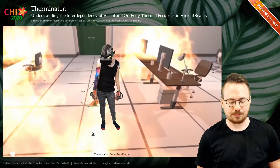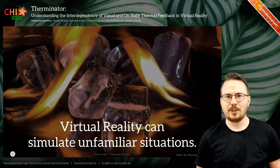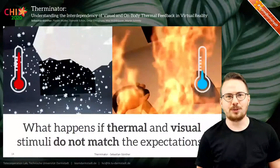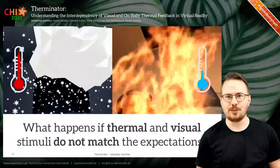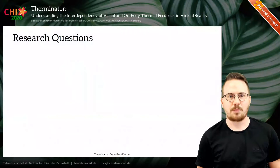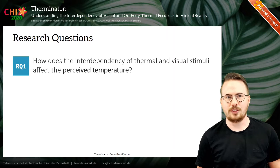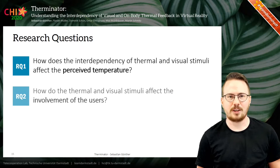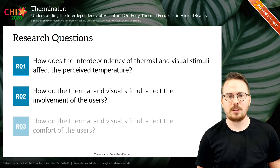After this, we thought: why should we stop here? Virtual reality can simulate unfamiliar situations such as having hot burning ice cubes. So we asked ourselves, what happens if thermal and visual stimuli do not match the temperature expectations of the user? For example, snow turns warm, and fire turns cold. Therefore, we defined three research questions: First, how does the interdependency of thermal and visual stimuli affect the perceived temperature? Second, how do the thermal and visual stimuli affect the involvement of the users? And third, how do the thermal and visual stimuli affect the comfort of the users?